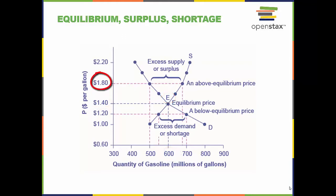At a price above equilibrium, like $1.80, quantity supplied exceeds the quantity demanded, so there is excess supply.